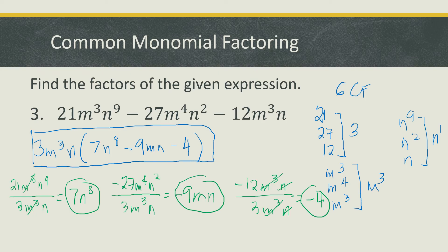Our final answer is 3m cubed n times 7n to the 8th minus 9mn minus 4. To check, distribute the common monomial factor to each term: 3 times 7 is 21, m cubed stays, n times n to the 8th is n to the 9th — correct. 3 times negative 9 is negative 27, m cubed times m is m to the 4th, n times n is n squared — correct. 3 times negative 4 is negative 12, m cubed and n just copy — correct.